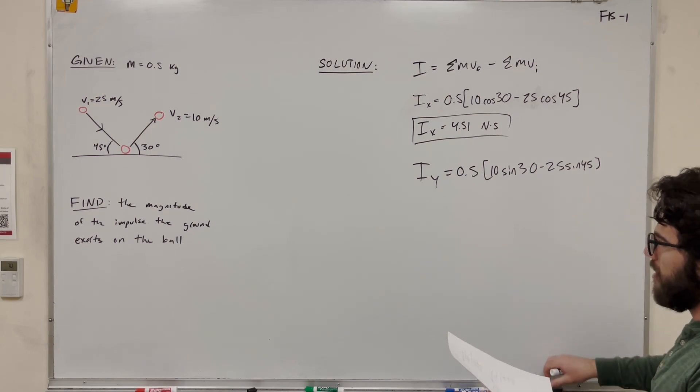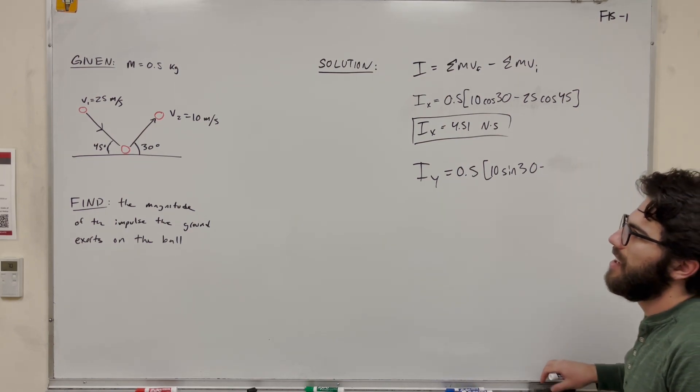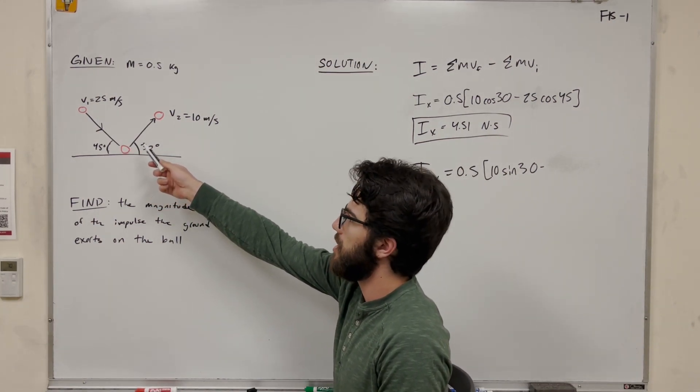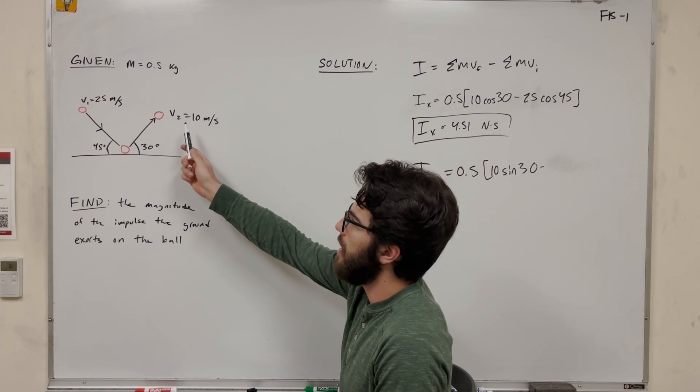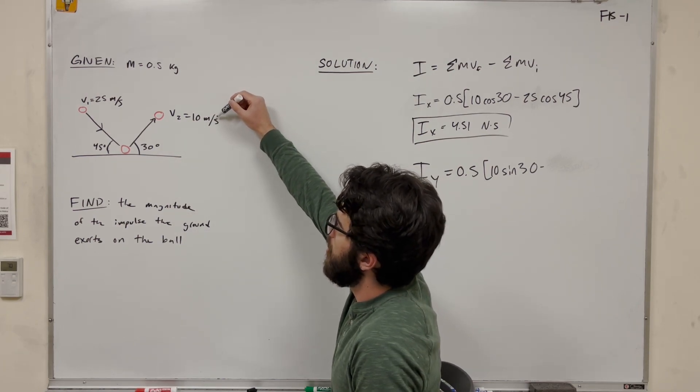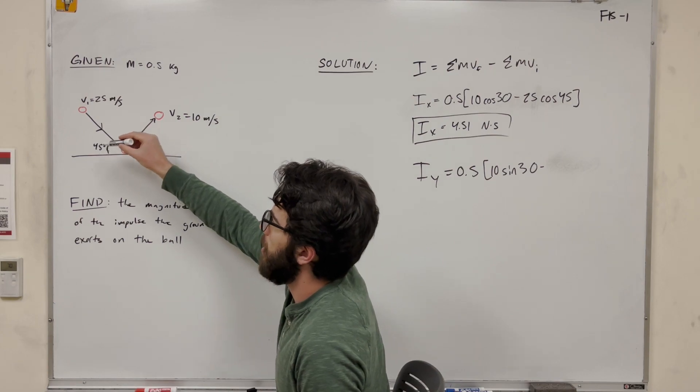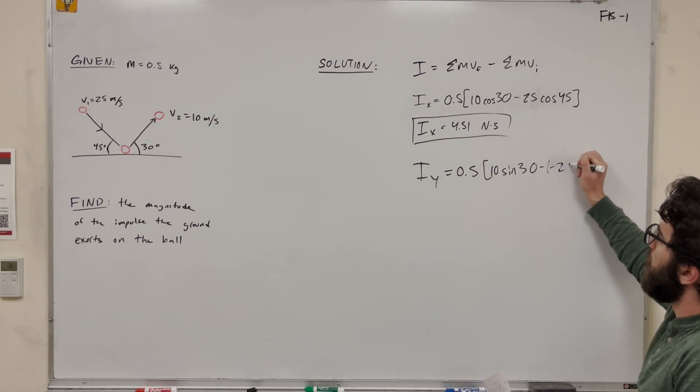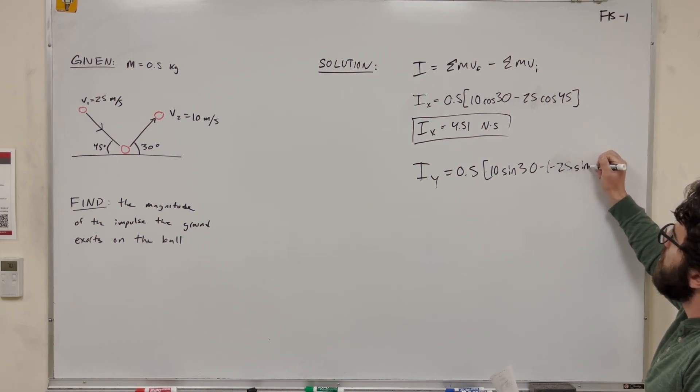But also I tricked you. So let's look at these - in the x direction, both of these vectors are pointing to the right, so they both have positive x velocity. But here, this velocity has a positive x component but a negative y component. So instead of just subtracting 25, we need to subtract negative 25 sine of 45.